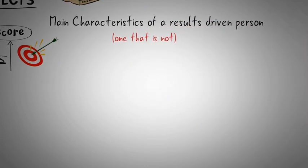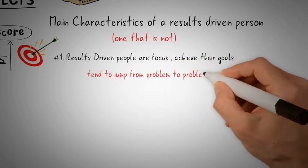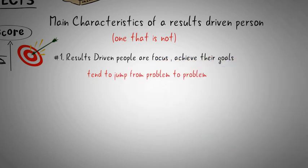Characteristic number one: Results-driven people are focused on improving the current situation and achieving their immediate goals whereas people that are not results-driven tend to jump from problem to problem attempting to fix everything at the same time.